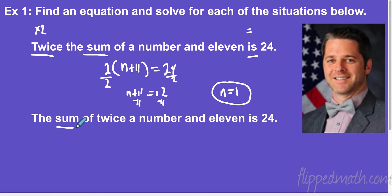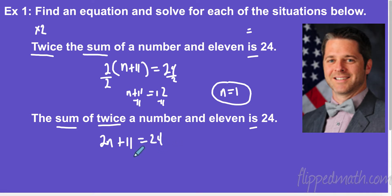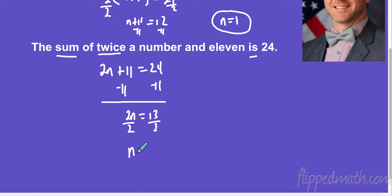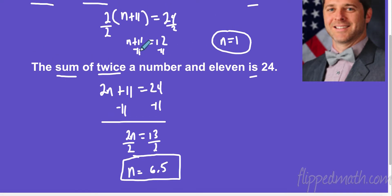Now I have sum again, twice again, and is — but this question is just a little bit different, and I did this on purpose. Up here I did twice the sum. Here I'm doing twice a number. So the sum of twice a number and 11 added together equals 24. Subtract 11, and I get 2n equals 13. Divide by two on both sides, and then I get n is six and a half. So we have a slightly different situation but very similar — that's going to come up a lot, which is why I chose those very specifically.